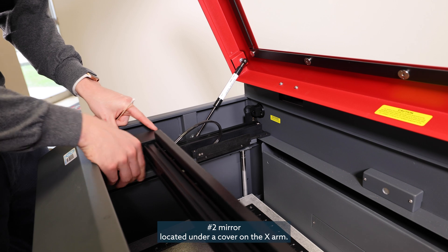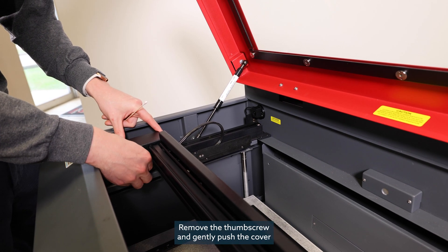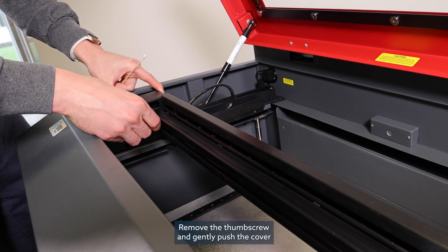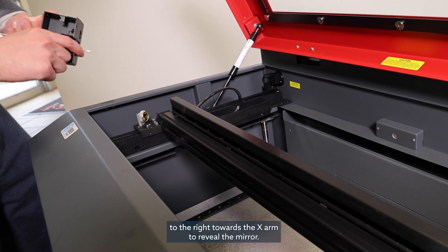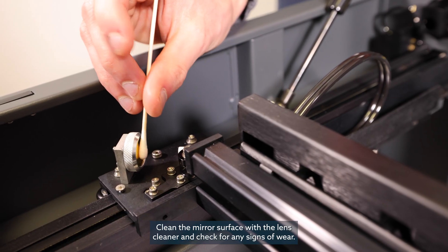Next, we'll look at the number two mirror located under the cover of the X arm. Remove the thumb screw and gently push the cover to the right towards the X arm to reveal the mirror. Clean the mirror surface with the lens cleaner and check for any signs of wear.